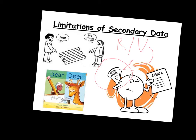Another limitation is that secondary data might have been created for a different purpose, and therefore it might not be precisely fit for the sociologist's purpose. For example, one sociologist may have researched gangs to look at the role of drugs within gang behaviour, and another sociologist might then want to use this research to find out about relationships between men and women within a gang — and it might not be exactly fit for purpose.